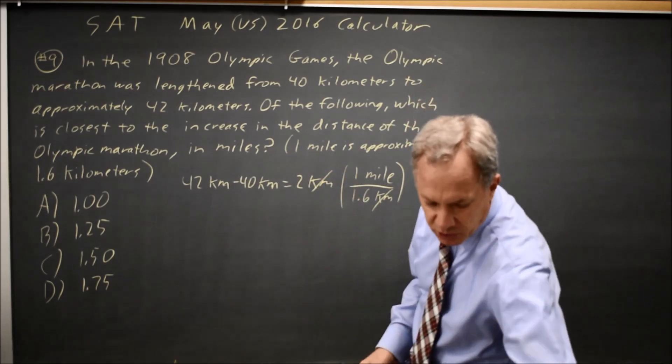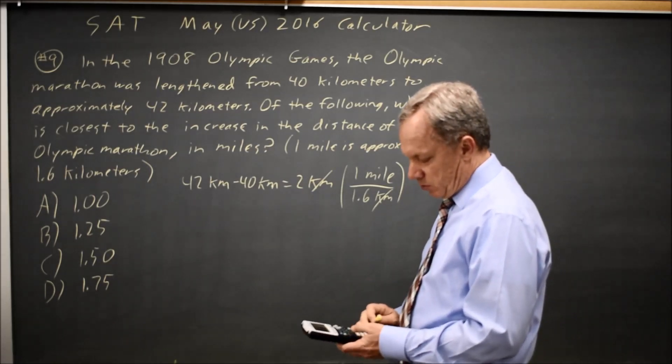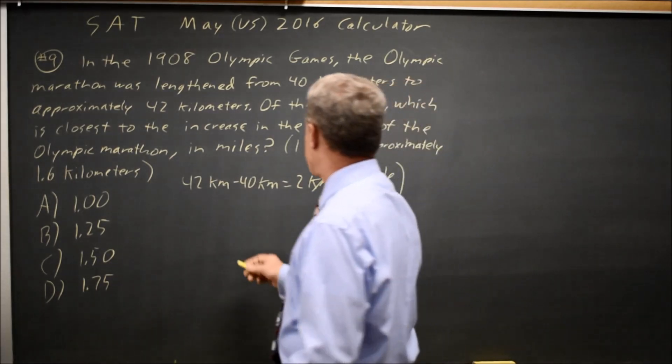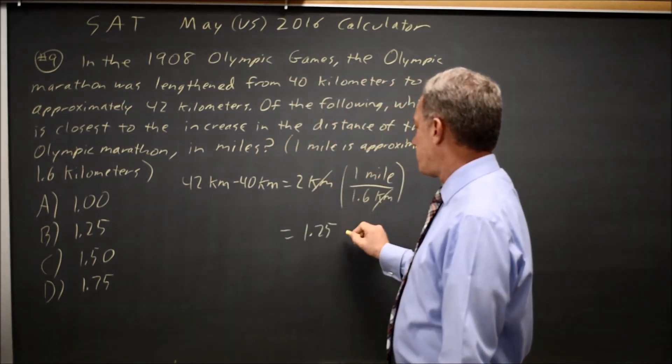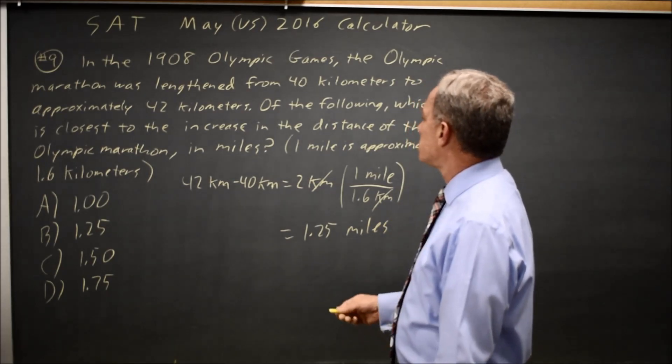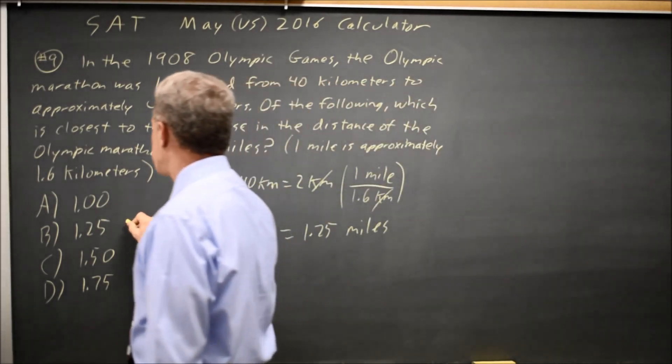So that's 2 over 1.6, which on my calculator is 1.25. And since the kilometers cancel, my units is miles. And their question was, what is the increase in distance in miles? That would be choice B.